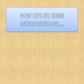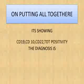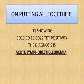Let's do some interpretation and application. Look at this dot plot B. The bulk of the population is falling in the double positive quadrant, showing positivity for both TDT and CD22. TDT is an immature cell marker and CD22 is a B cell marker. From dot plot C, the major bulk of the population is falling under the double positive quadrant, showing CD19 positivity and CD10 positivity. CD19 is a pan B cell marker and CD10 is also a B cell marker. Putting it all together, it is showing CD19, CD10, and CD22 positivity, and the diagnosis is acute lymphoblastic leukemia.